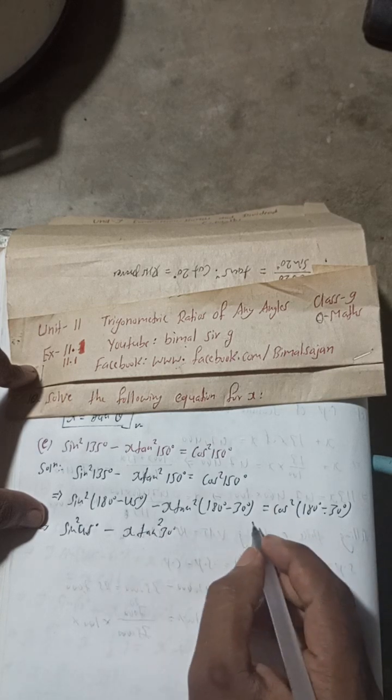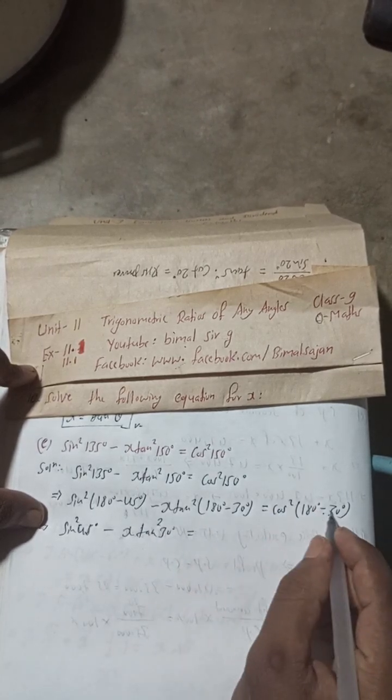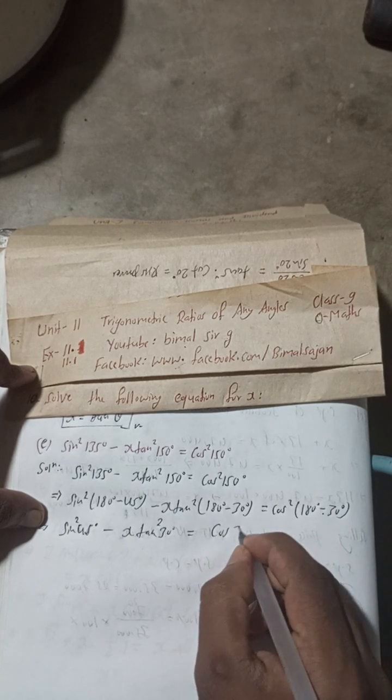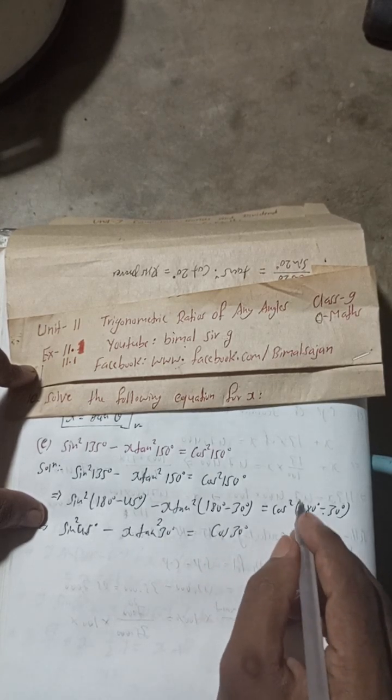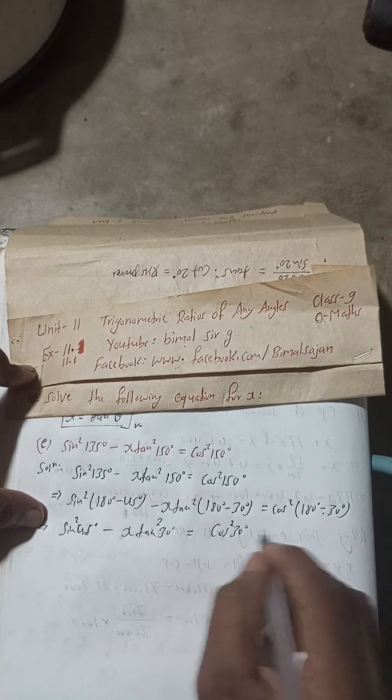This is equal to cos²(180° - θ), which is cos 30°. But there is a square, so whatever minus-plus, it will be plus only.